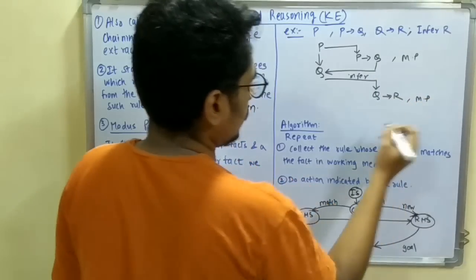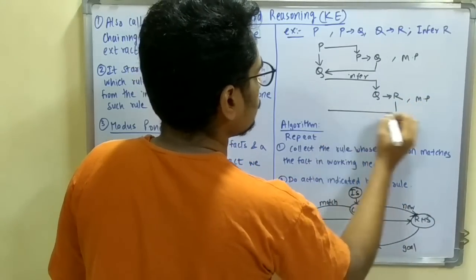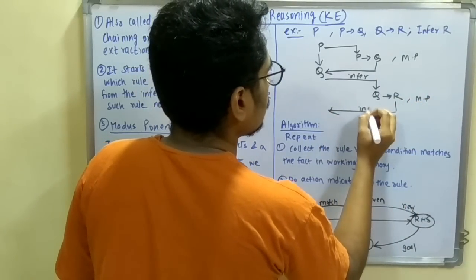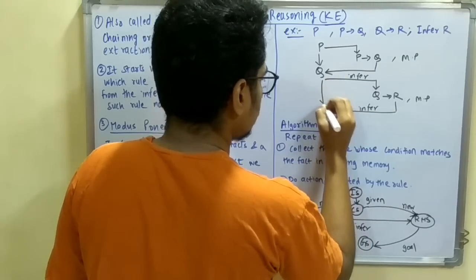That is by using modus ponens, and from here you can infer and get new knowledge or a new fact as R.